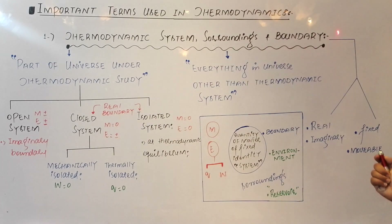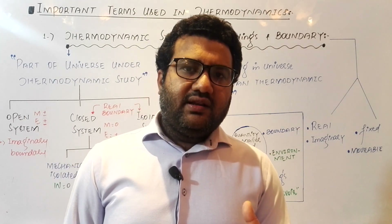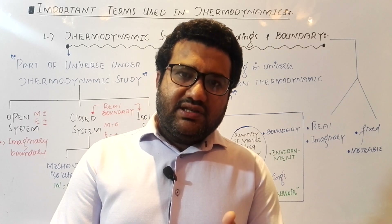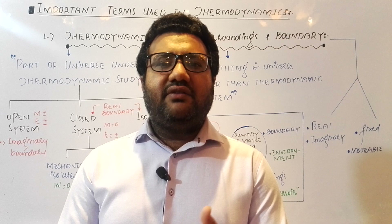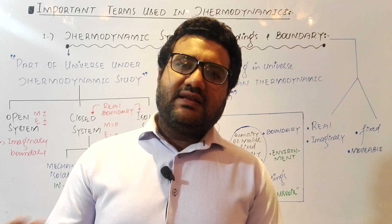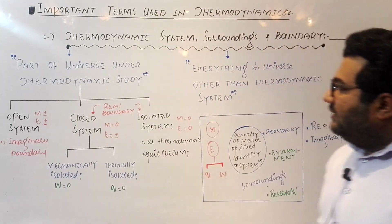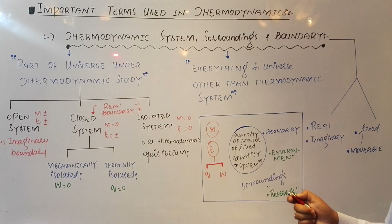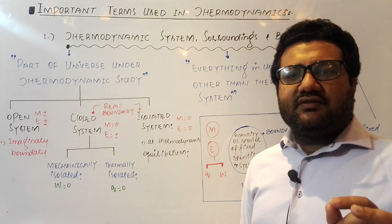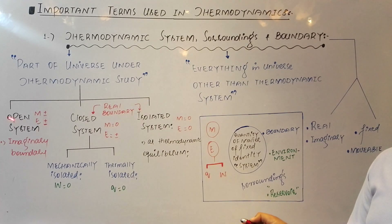Boundary is very important because it is the boundary that defines a system. The exchange of energy or matter between the system and surroundings always occurs through the boundary. Whether the boundary is permeable, semi-permeable, or impermeable decides the nature of the system. On the basis of the permeability of the boundary wall, we divide the thermodynamic system into three main categories.